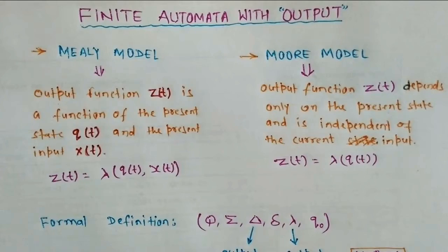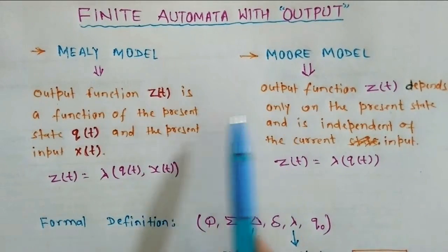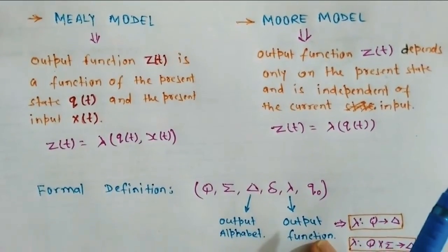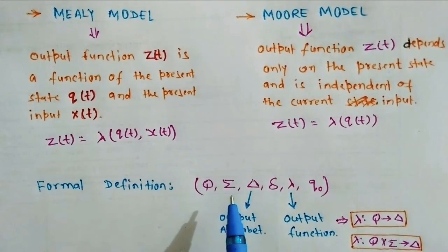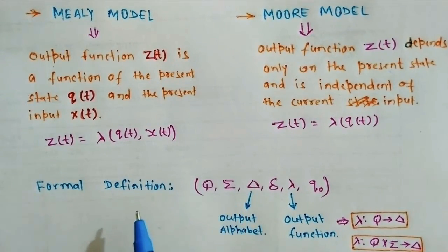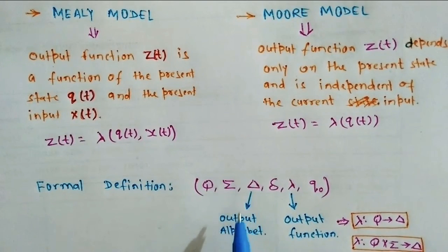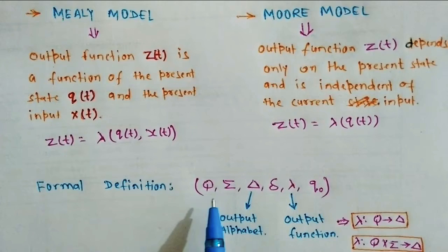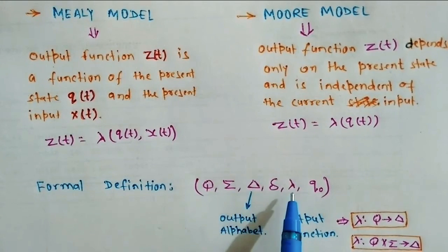Now we will define the formal definition of these two models. As we have defined a finite state machine by five tuples, here we have one extra tuple — in other words, these models are defined by six tuples.